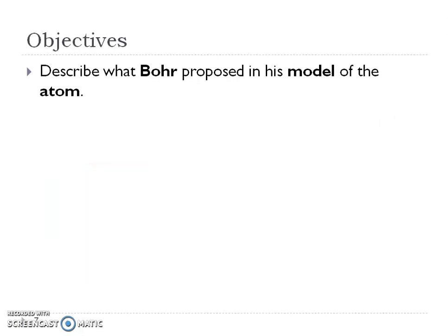So in section one deals with revising the atomic model. Your objective is going to be what Bohr, this guy named Bohr, this chemist Bohr, proposed as his model of the atom. So you're going to see that there are different models of the atom and how it looked like over the years.